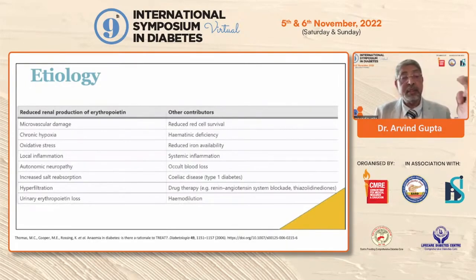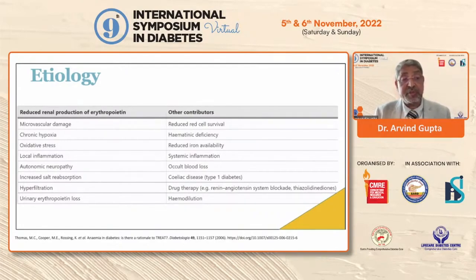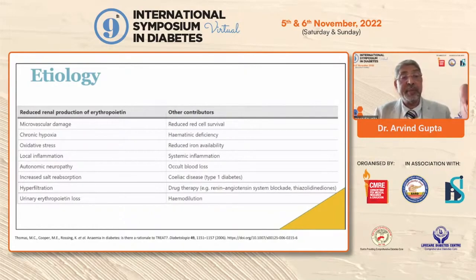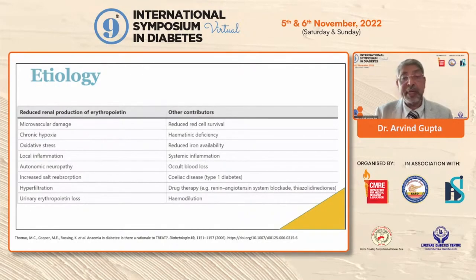Microvascular damage can reduce rates of survival. Chronic hypoxia in diabetes may lead to hematonic deficiency. Oxidative stress leads to reduced iron availability. Local inflammation leads to systemic inflammation. Autonomic neuropathy leads to occult blood loss. Increased salt reabsorption, hyperfiltration in the kidney, drug therapies, and urinary erythropoietin loss also contribute. There is reduced renal production of erythropoietin and several other contributors which may lead to anemia in diabetes.